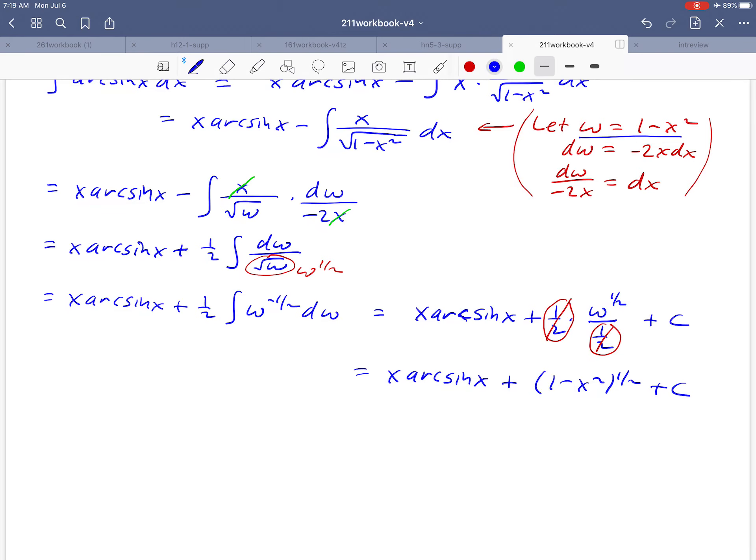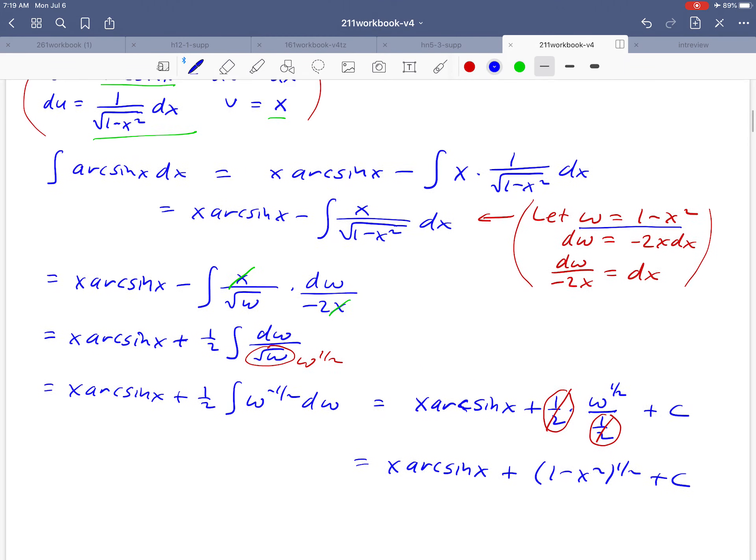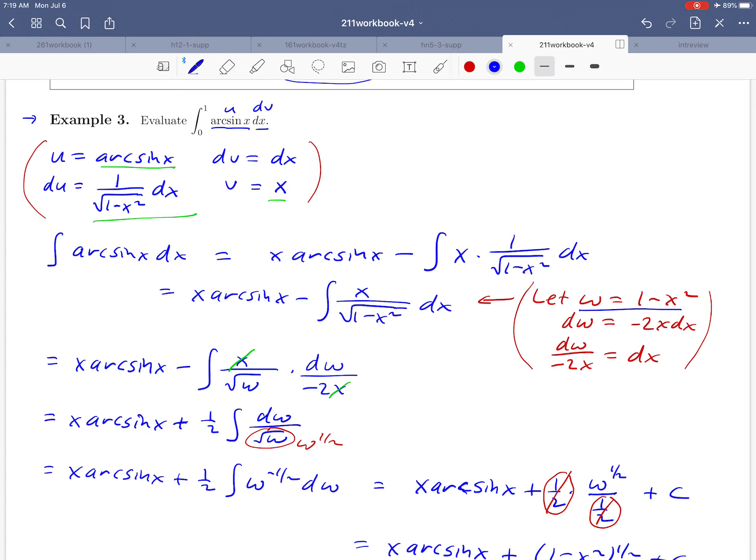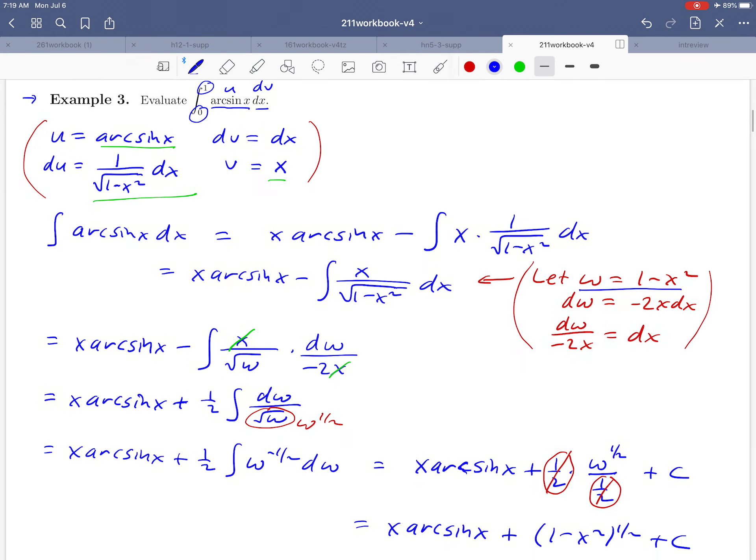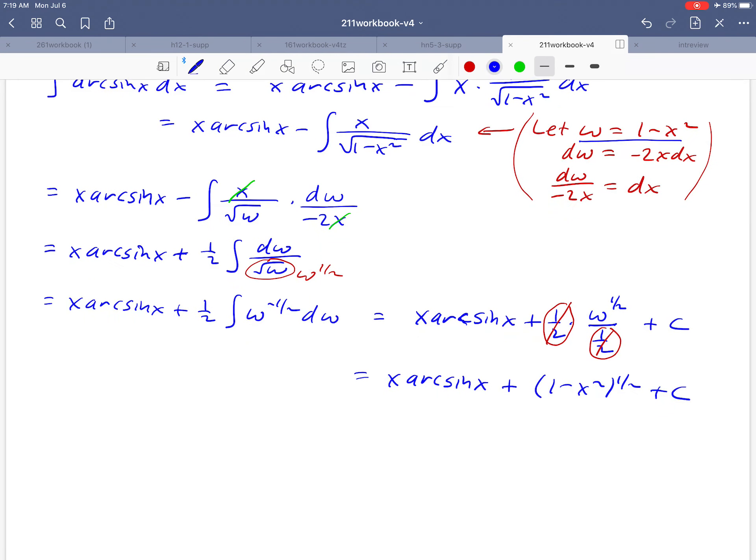But we're not quite done with this problem because we have limits on our integral. We're integrating from 0 to 1. So after all that work, we've still got a little bit more to do here. So the integral that we're looking at, all we need to do is to just take the 1 and the 0 and plug it in. So remind ourselves where we started. We know that an antiderivative looks like x arc sine of x plus 1 minus x squared to the 1 half. We're just going to plug in our limits now.